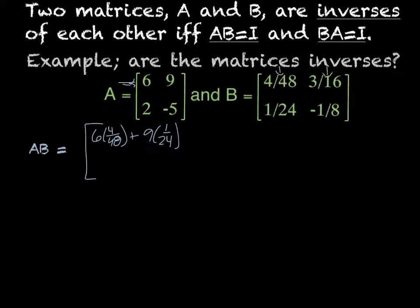second column, is going to give me 6 times 3 over 16 plus 9 times negative 1 over 8.